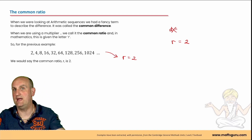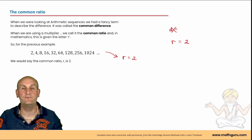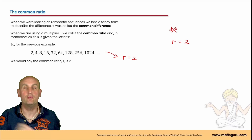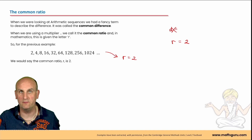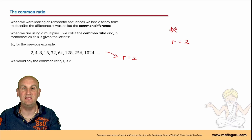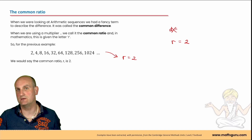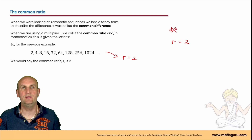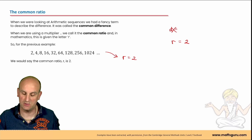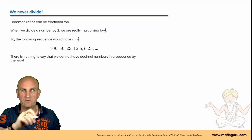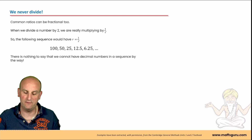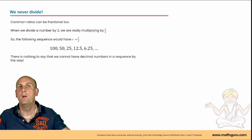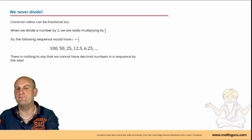Although I'm writing on the notes now, you can download them from MathsGuru.com and write all over them. If you're allowed to use a summary book, download them, cut them up, and put in your summary book what you need. The common ratio is what we multiply by to get from term to term — we never divide.